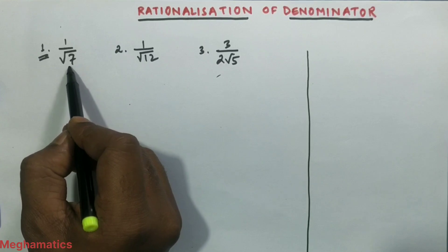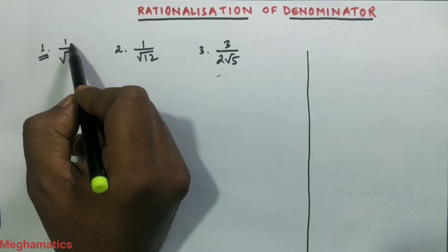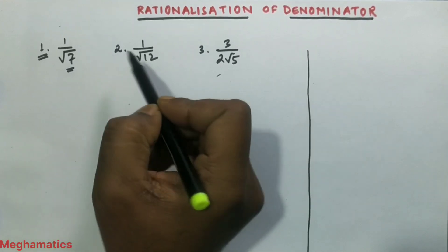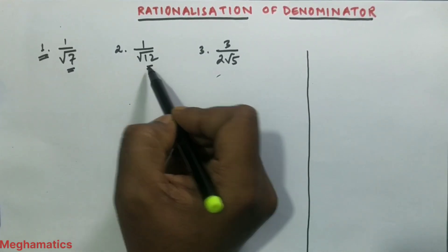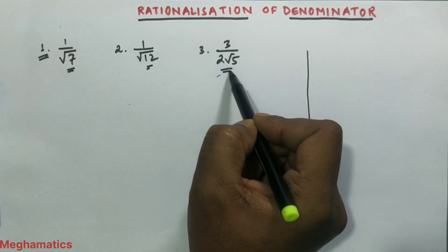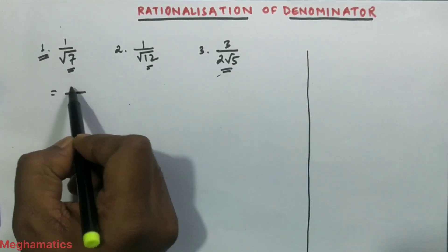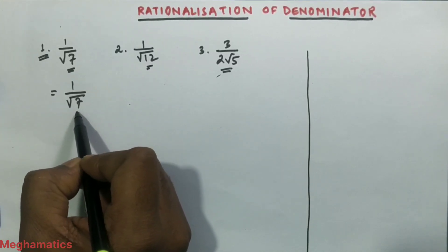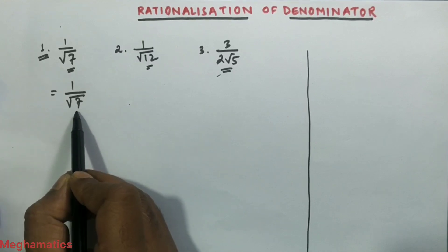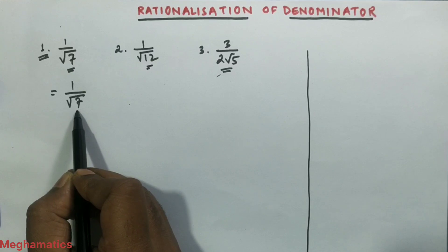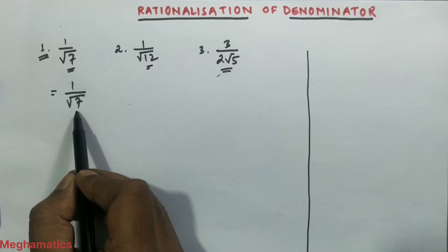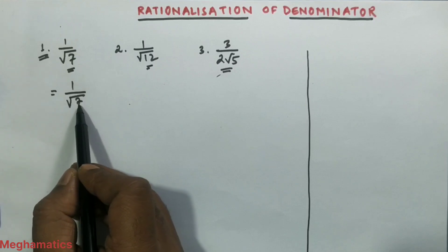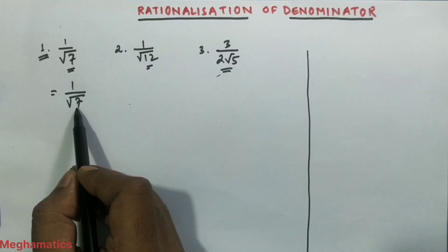Since we need to rationalize the denominator, we look at the denominators: root over 7, root over 12, and 2 root over 5. We mostly focus on the denominator and check whether it is a prime number or a composite number. Since 7 is not divisible by any number except 1 and 7, it is a prime number.